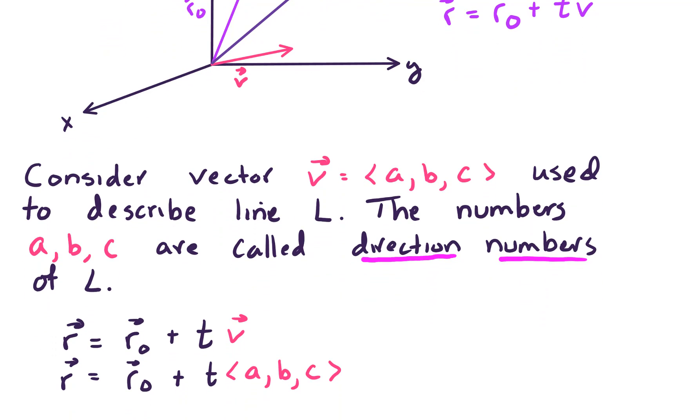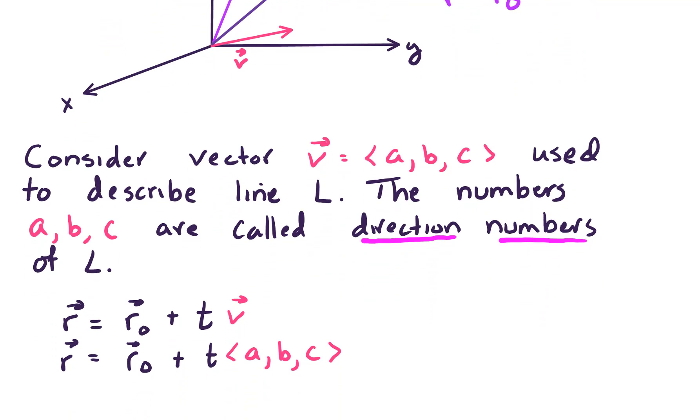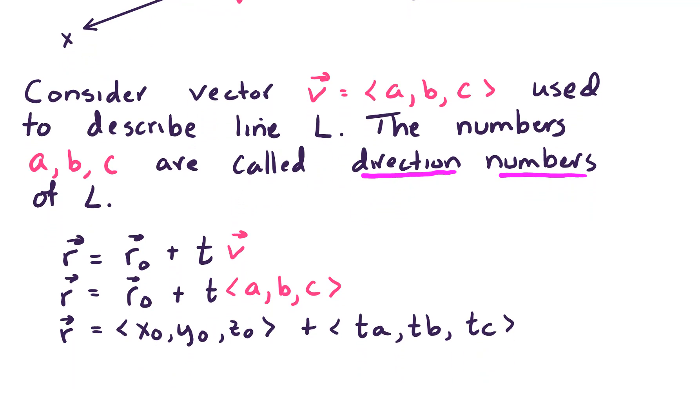And as we said, we have R equals R-naught plus T times V. Substituting in what we know for V, we can actually write an equation for R using the components of R-naught and vector V. So remember R-naught is given by this terminal point X-naught, Y-naught, Z-naught. And we have a scalar multiplication. So the second vector here is T times A, T times B, and T times C.